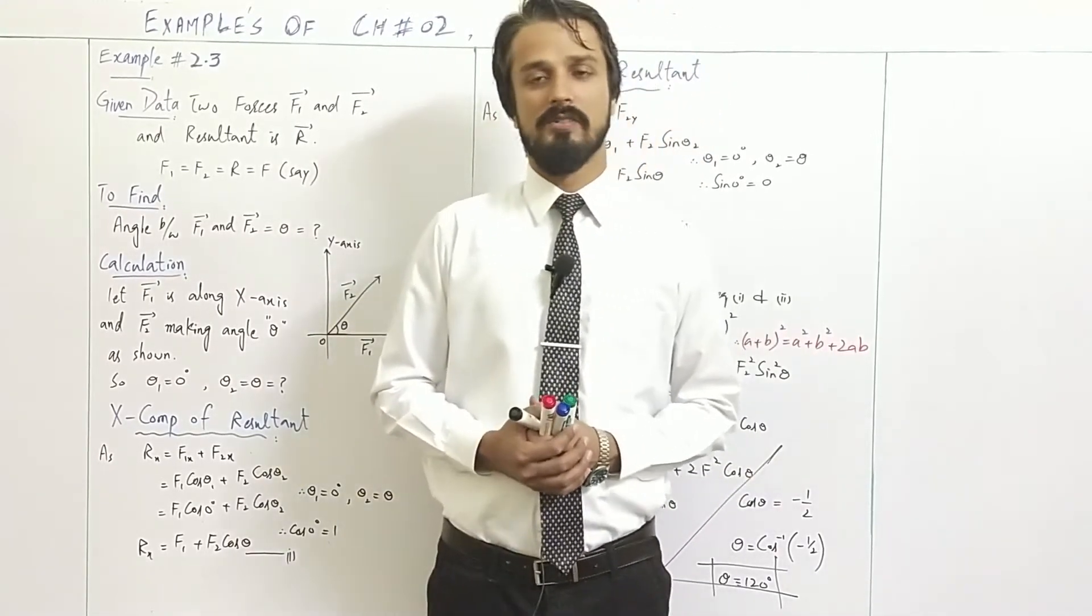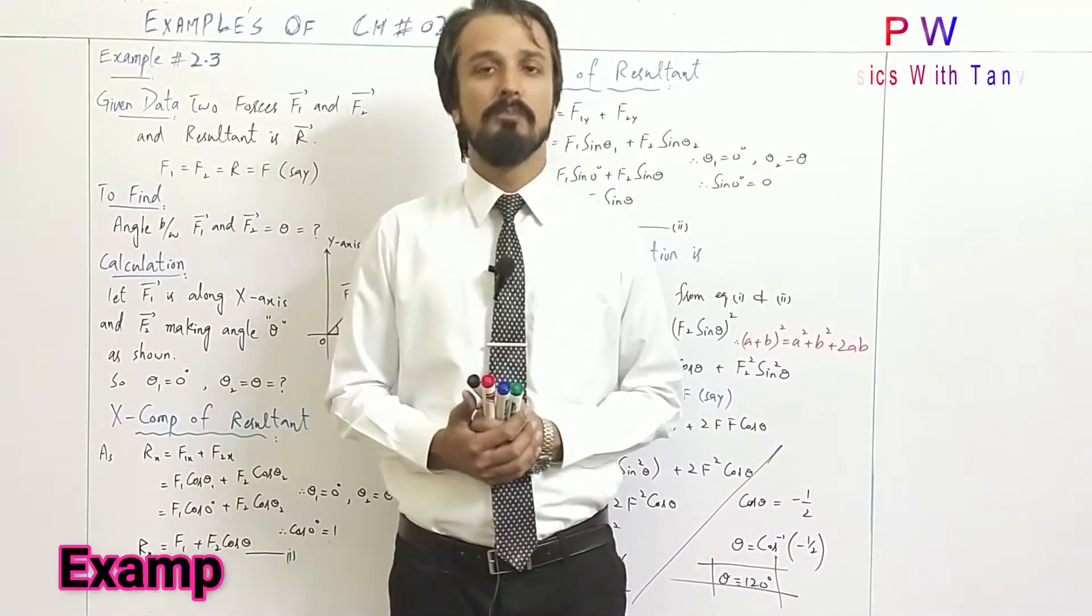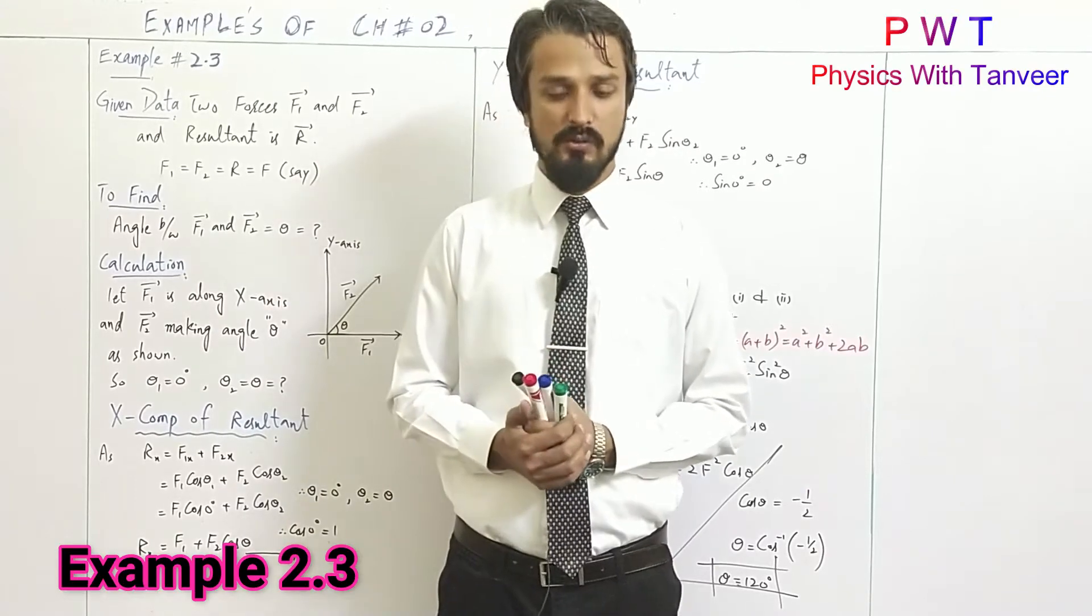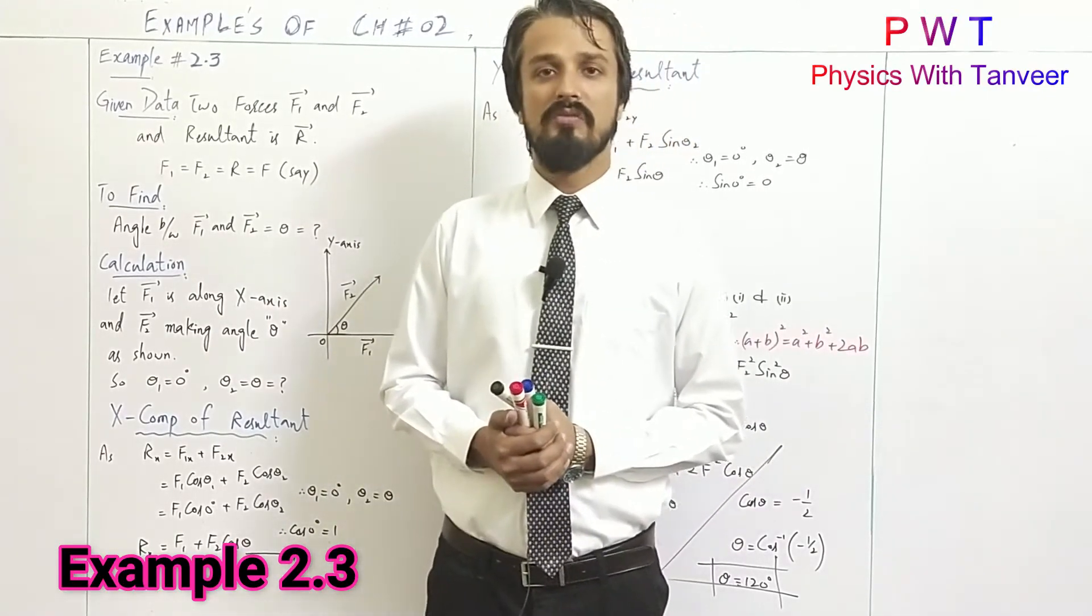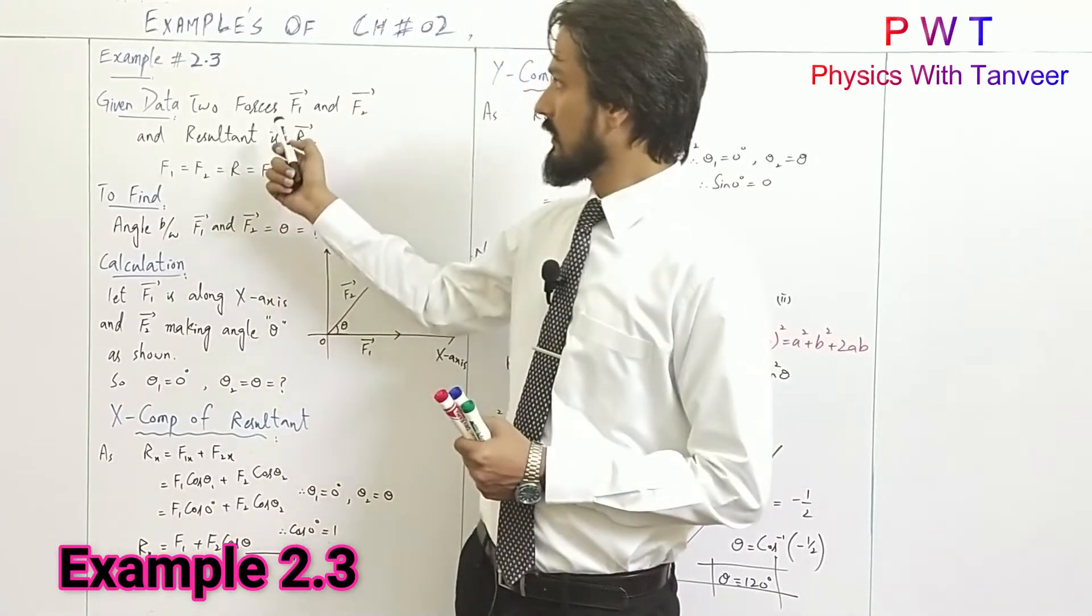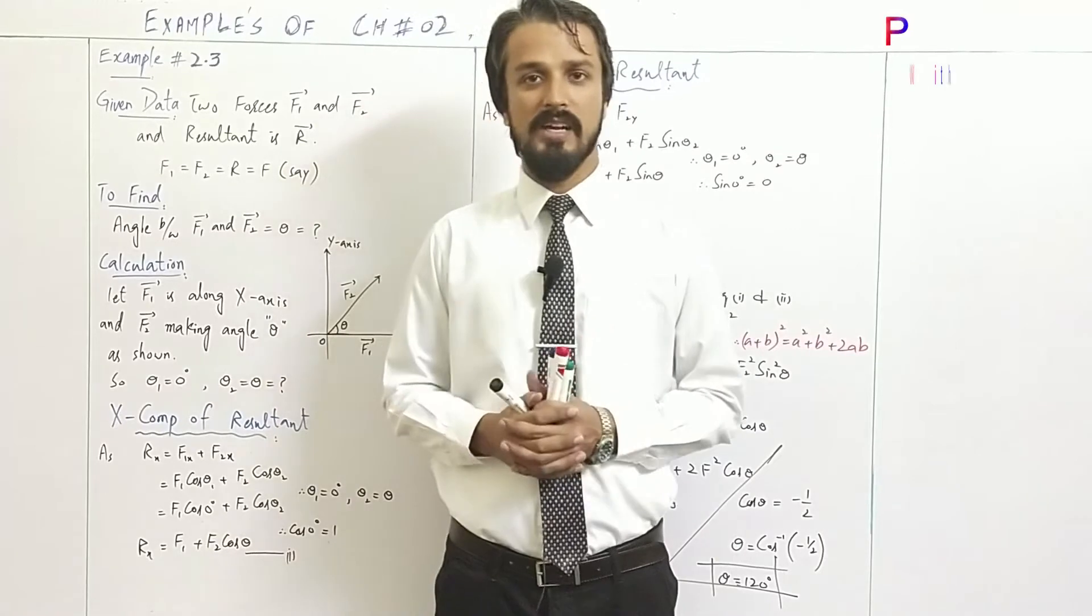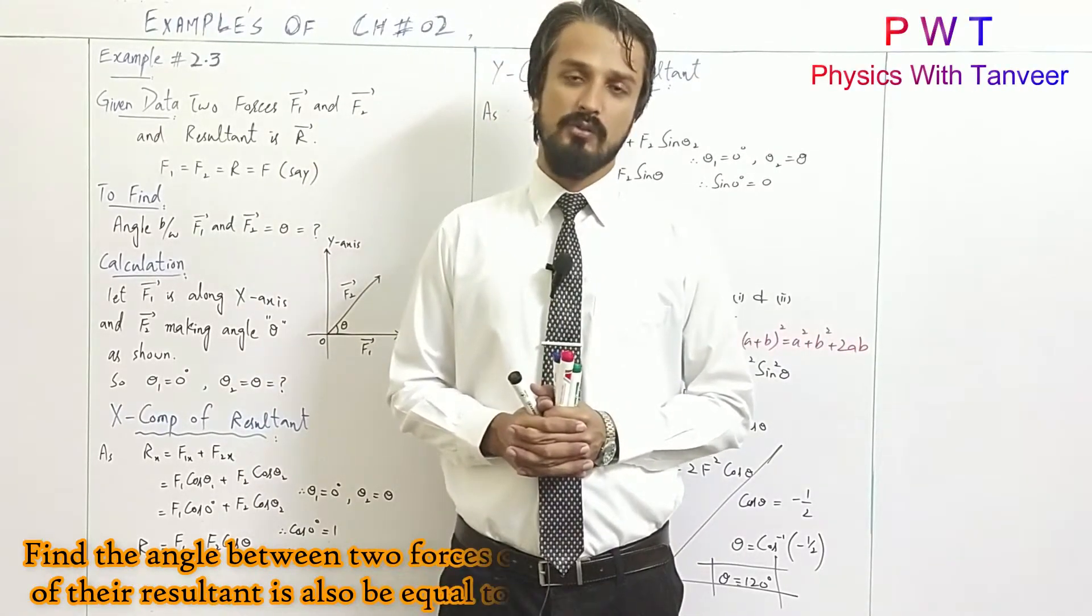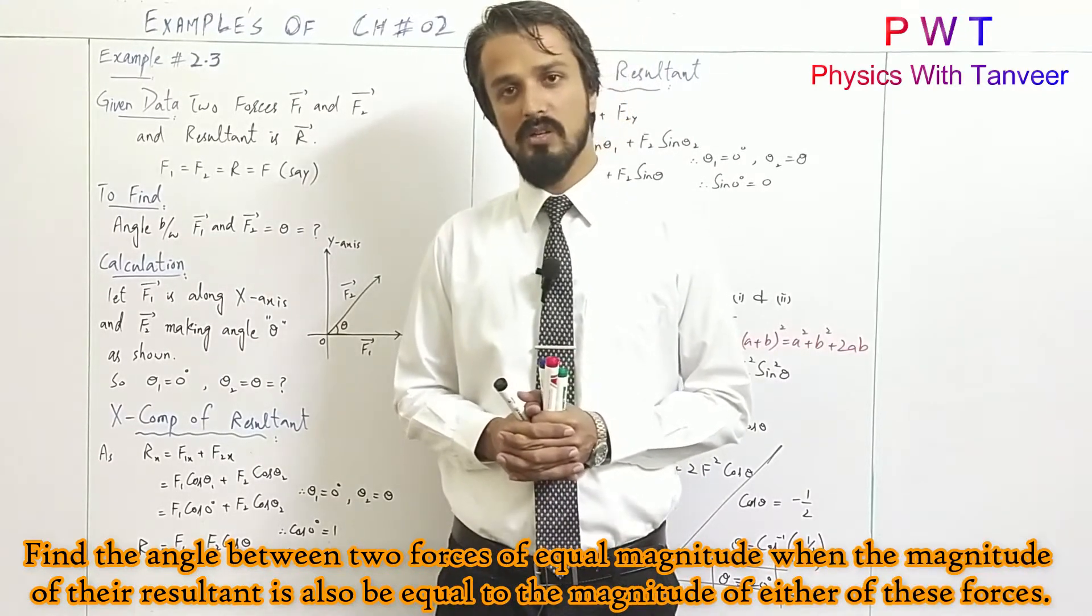Welcome to our channel Physics with Tanvir, example 2.3 from chapter number 2 on vector addition by rectangular components. We find the angle in this example. The statement is: find the angle between two forces of equal magnitude when the magnitude of the resultant is also equal to the magnitude of either of these forces.